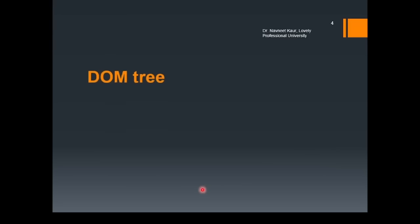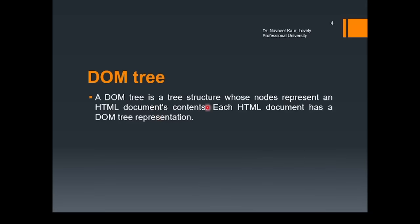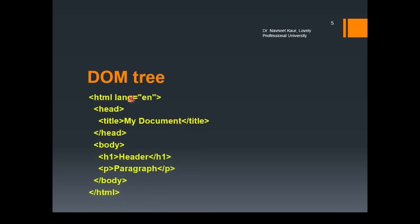Now let's have a look at what is a DOM tree. A DOM tree is a tree structure whose nodes represent an HTML document's content, and each HTML document has a DOM tree representation. Let's understand this with the help of a code. Let's say you have been given a piece of code where you can see we have an HTML tag, head tag, title, body, h1, paragraph — these are the different kinds of tags. Now if you are asked to create a DOM tree, that is a Document Object Model, you need to create a tree out of it. We already discussed that DOM is like a family tree.